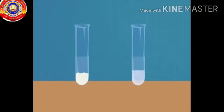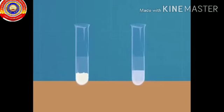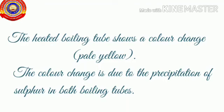Now what do you observe? In which of the boiling tubes is the precipitate formed faster? What is the color of precipitate? The color change is due to the precipitation of sulfur in both boiling tubes.